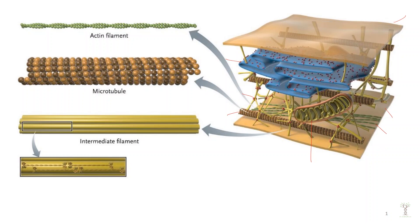There are three main categories of these that I want to focus on. First, we'll look at the largest one called a microtubule. Microtubules look like big hollow log structures and they are composed of individual proteins called tubulin. The main function of microtubules is to transport molecules inside the cell. Motor proteins can almost walk along the microtubule and carry vesicles filled with proteins or substances.